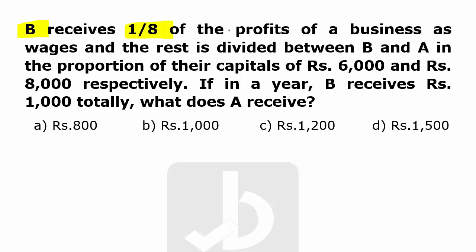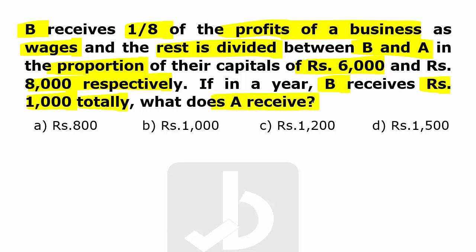B receives one-eighth of the profit of a business as wages, and the rest of the money is divided between B and A in the proportion of their capitals, that is rupees 6000 and rupees 8000 respectively. In a year, at the end, B receives rupees 1000 totally. How much is the money received by A?